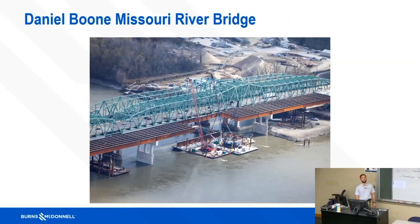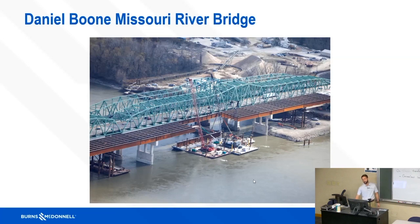Another project on the St. Louis side is the Daniel Boone Missouri River Bridge on I-64/40 going into Chesterfield Bottom. This had a large navigation span of 510 feet. As you can imagine, with an L of 510 feet you get really high moments and large deflections — that's why the girders on this project were actually about 13 feet tall, to give a bigger moment of inertia.